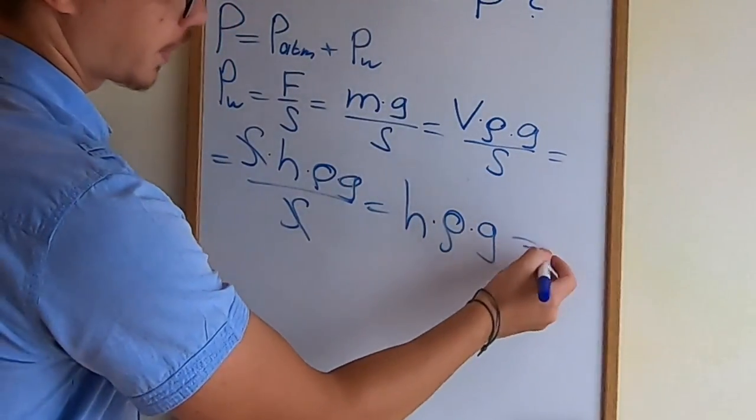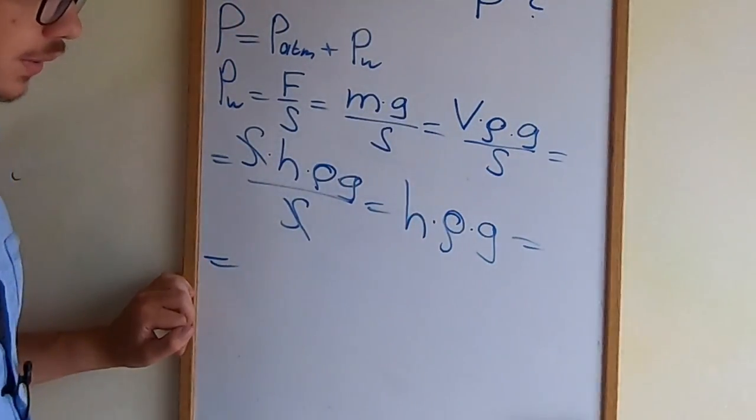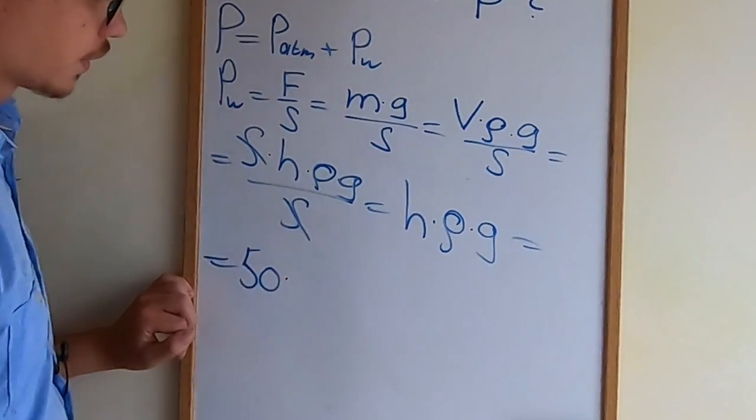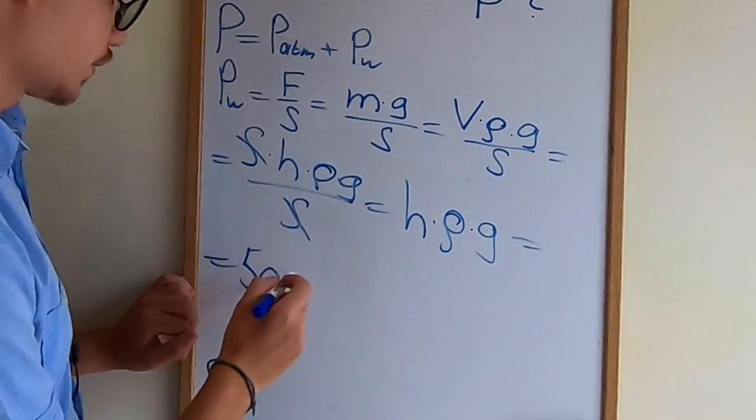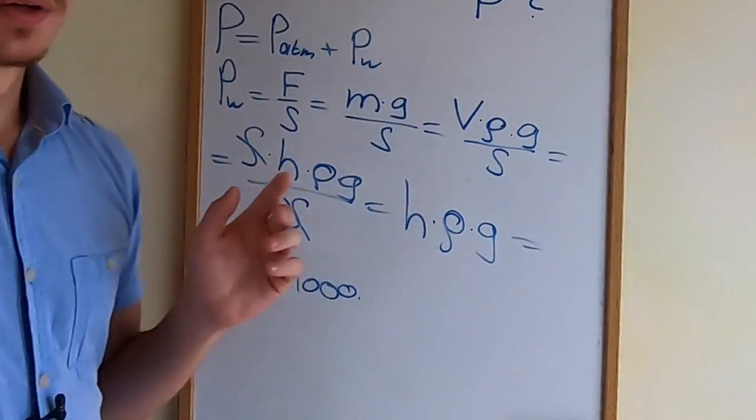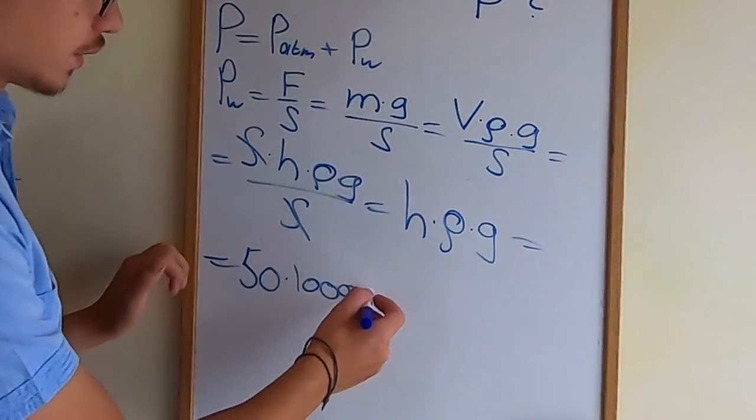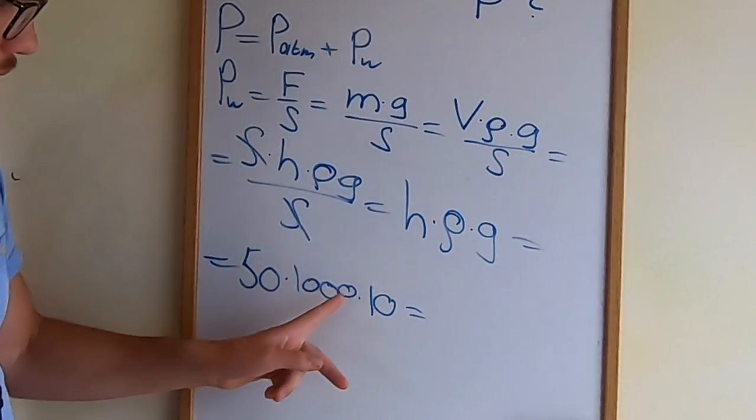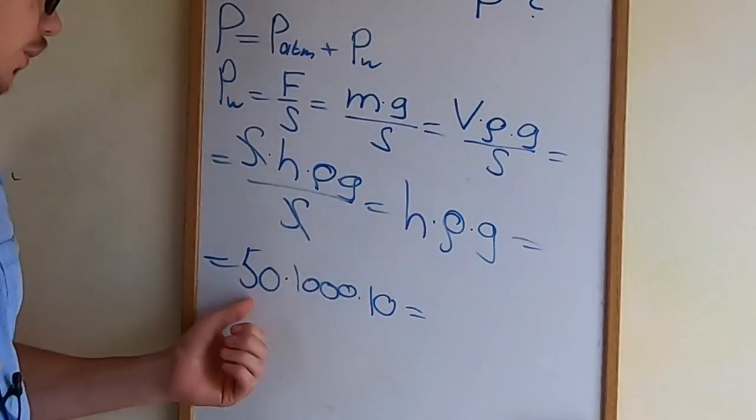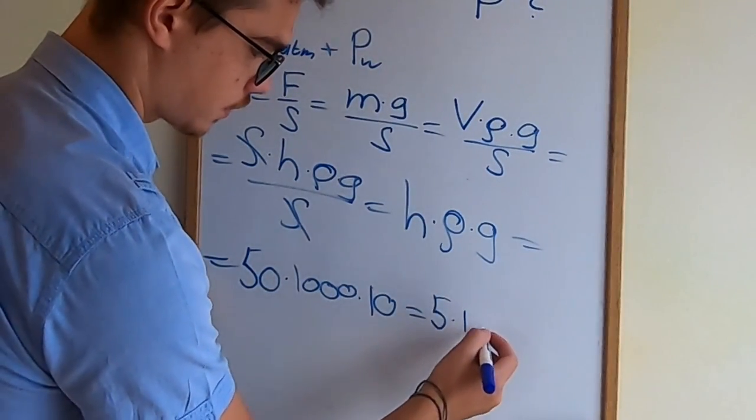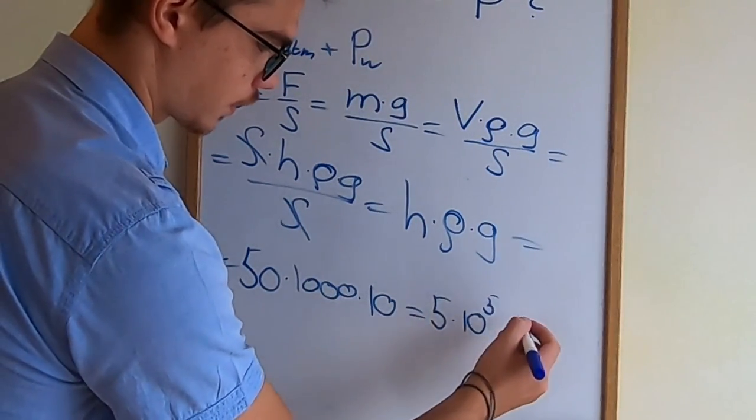Now just plug in the numbers to calculate that the pressure is equal to 50, the depth of the water, times its density which is 1000, times the acceleration. Now I'm going to approximate and say that it is equal to 10. Now we have 1, 2, 3, 4, and 5 zeros, and only 1, 5. Then we get 5 times 10 to the 5th power pascals.